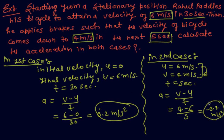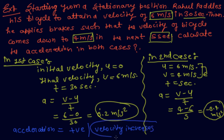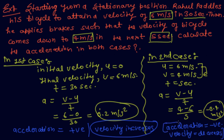If you observe this example, in the first case acceleration is positive, which means velocity increases. But in the second case, acceleration is negative, which means velocity decreases. When acceleration is negative, this type of acceleration is called retardation. So negative acceleration is called retardation and positive acceleration is simply called acceleration.